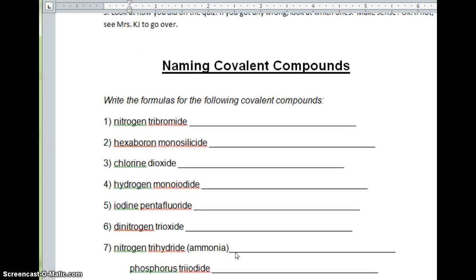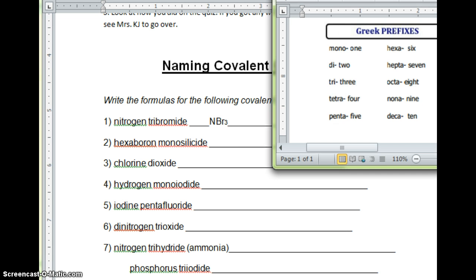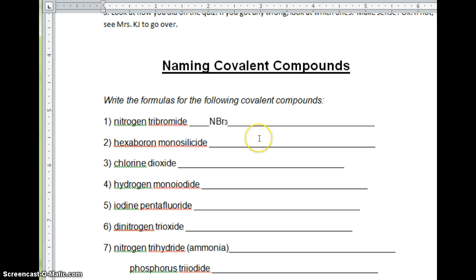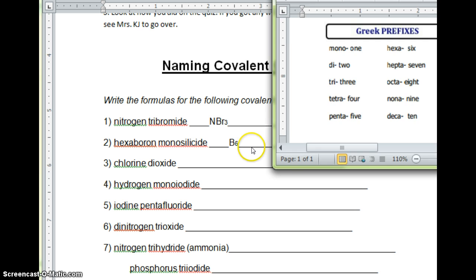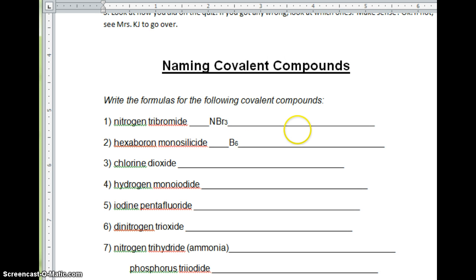Now, let's see if we can work backwards. What about if I have nitrogen tribromide? How many nitrogens? One. How many bromines? Three. NBr3. Let's try this one. Hexaboron monosilicide. Hexa, like hexagon, means six. So hexaboron would be six for a subscript. And then mono means how many? One. So I have one silicon. B6Si.